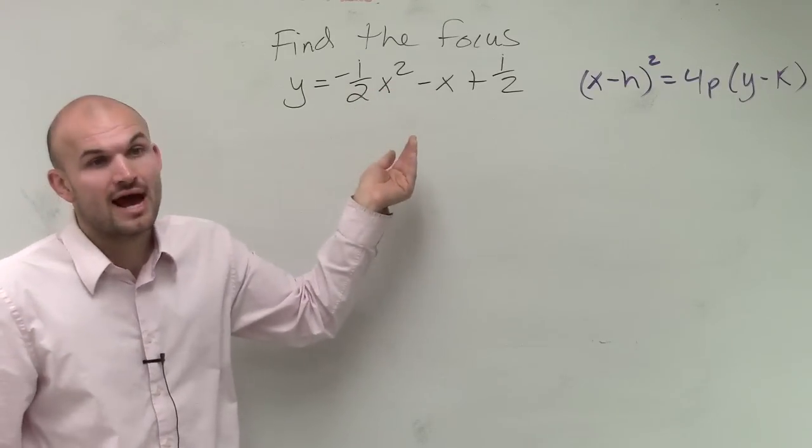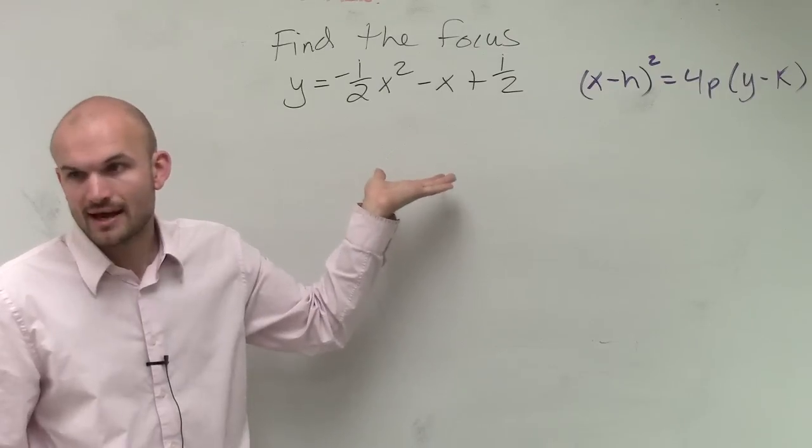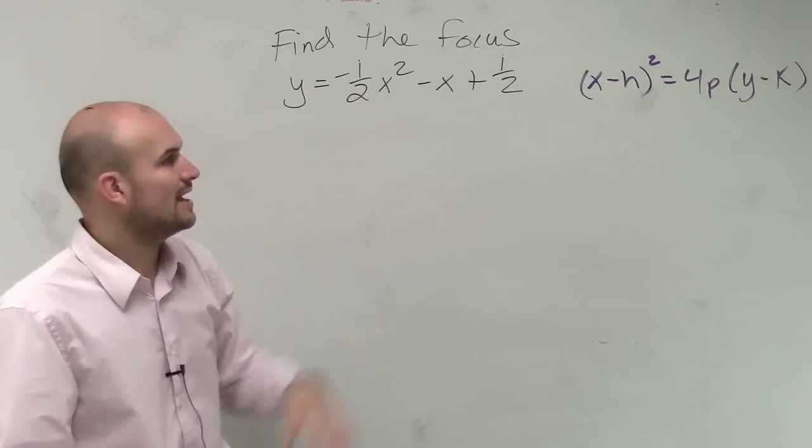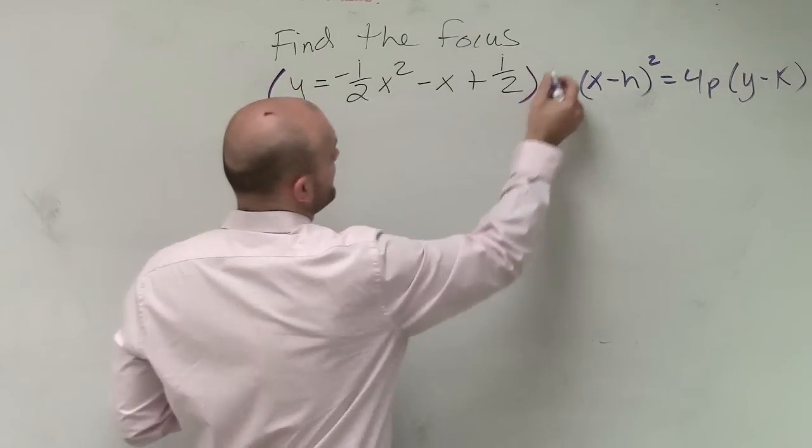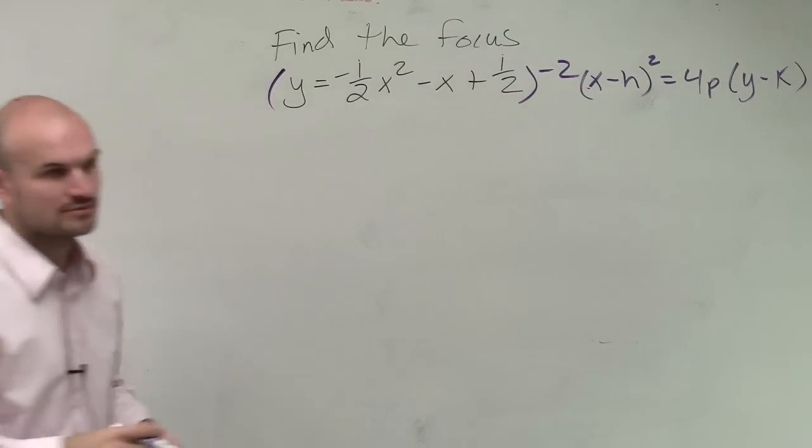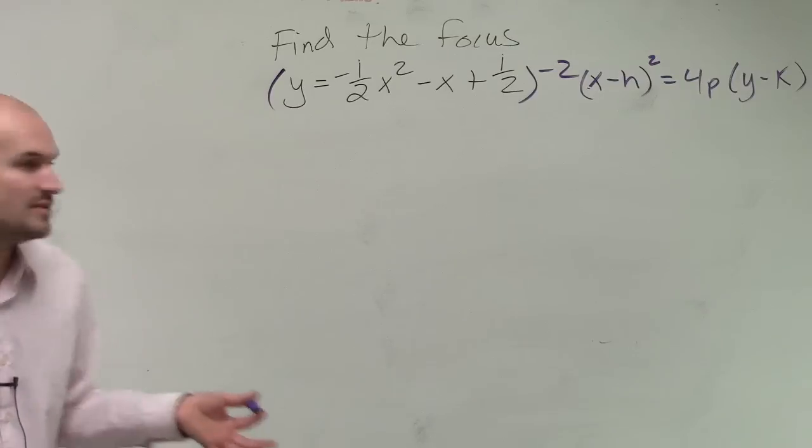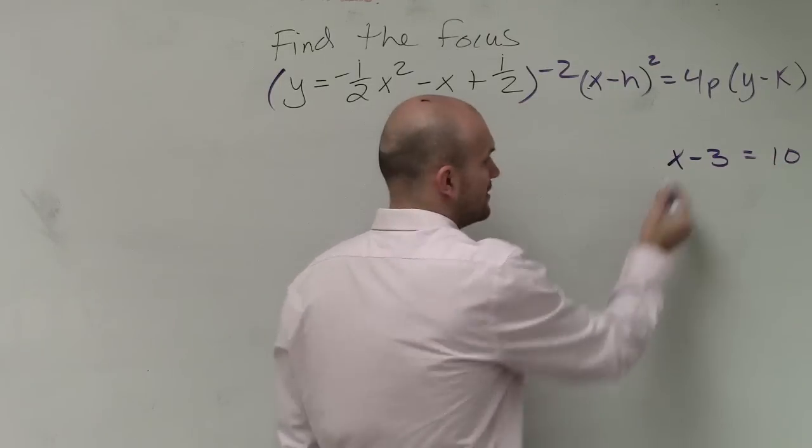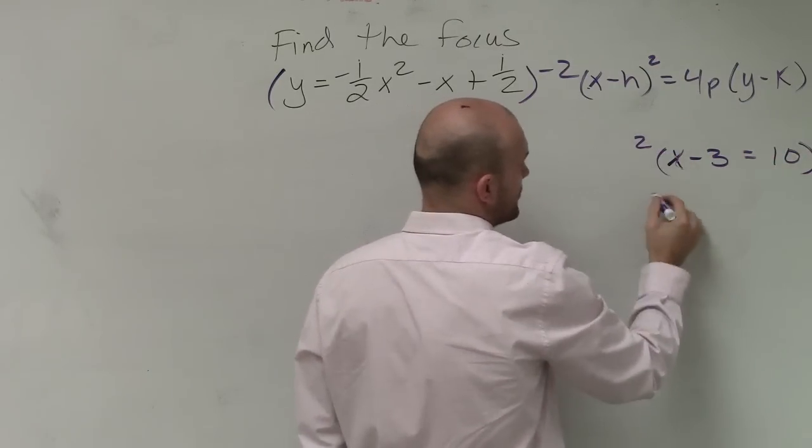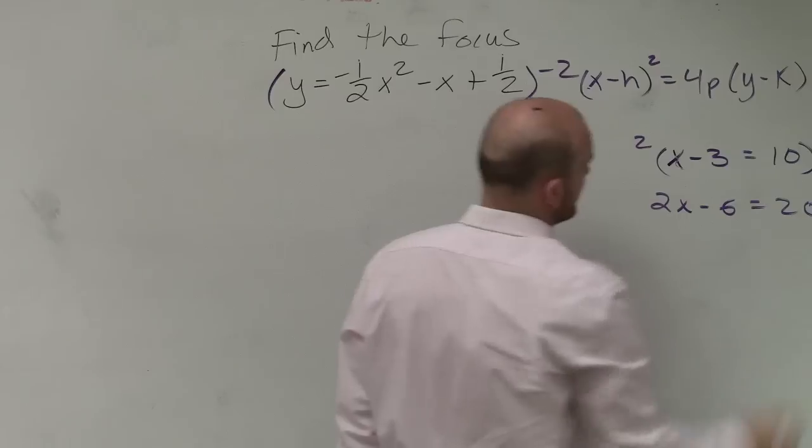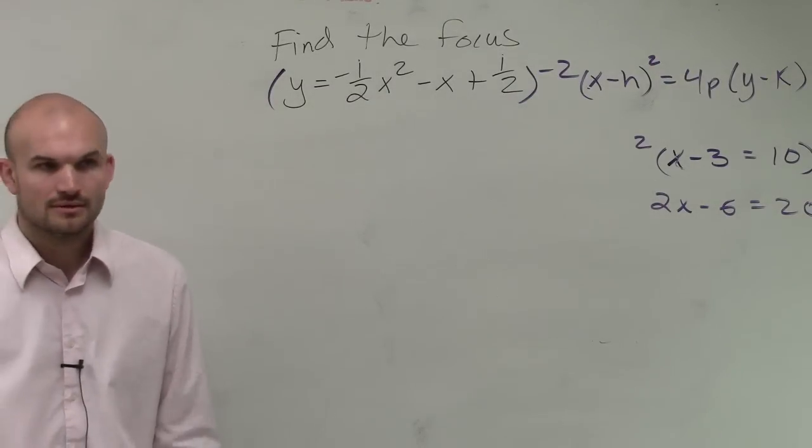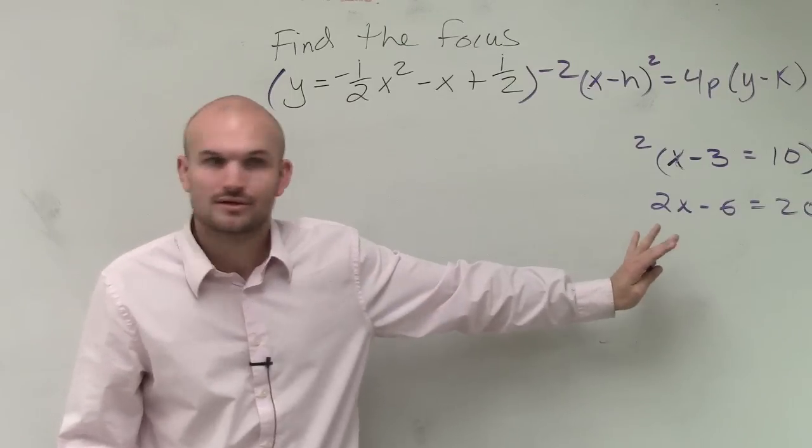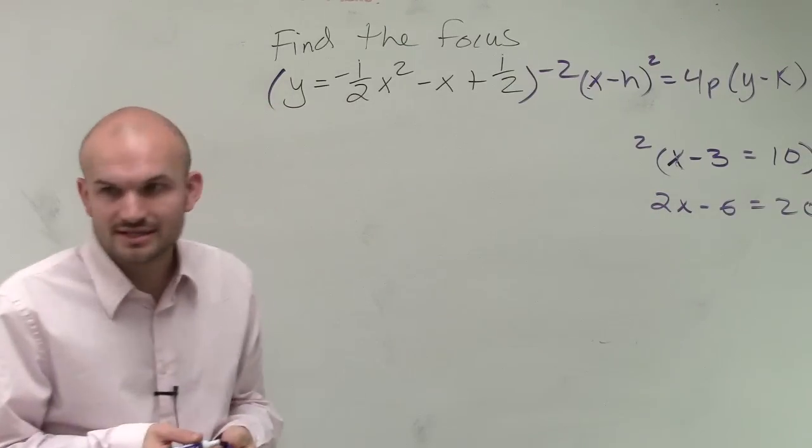We could factor out a negative one-half, and that could work. But what we could also do rather than factoring out a negative one-half, is it okay if I just multiply everything times a negative 2? If I have an equation x minus 3 equals 10 and I multiply everything by 2, I get 2x minus 6 equals 20. Are those going to provide me the exact same answer? Yeah. So it's okay as long as you multiply everything by a constant and you're consistent with that, you're going to still get the same answer.